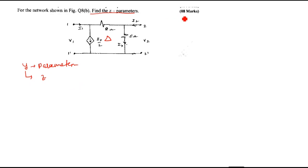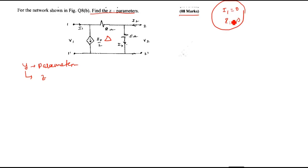Is that okay? It is asked for 8 marks. Instead of using relations, the Z parameters can be calculated by setting I1 equals to 0 and I2 equals to 0. But I feel this method is more convenient, because I will apply KCL at the node and compare with the standard equations to get the Y parameters. Using the relations, I will get the Z parameters. So we will follow this method.